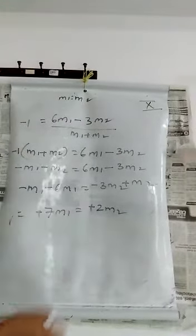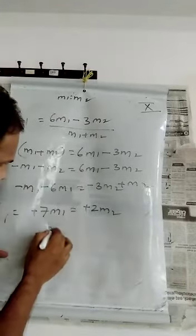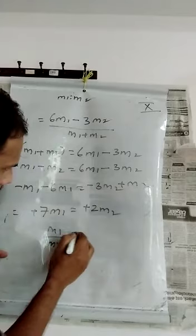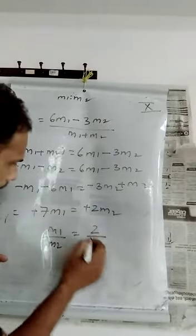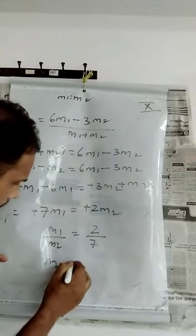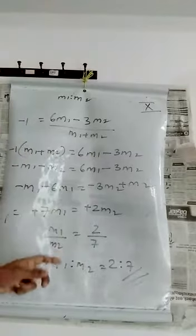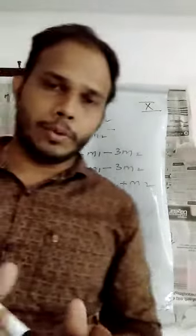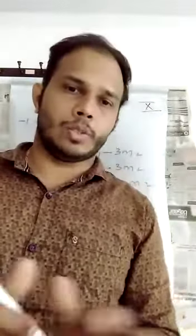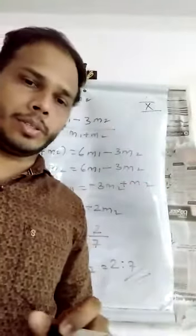Equal to -7M1 equals -2M2. So minus minus you can cancel. M1 by M2 equals 2 by 7. So M1 is to M2 equals 2 is to 7. The ratio is 2 is to 7. If you want, you can take the Y coordinates also. Again you will get the same result. I hope that you understood this concept.